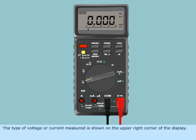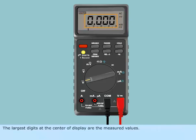The type of voltage or current measured is shown on the upper right corner of the display. The largest digits at the center of display are measured values.